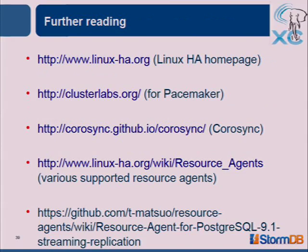Here are some links: the Linux HA home page, Pacemaker, CoroSync. This site lists all the resource agents available — I think about 100 or so — including resource agents for DB2, MySQL, PostgreSQL, IP addresses, DRBD, SAN, Apache. You can look at this documentation if you want to play around with the latest PgSQL resource agent.